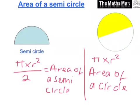It's quite simple. We just need to find the area of the circle and then divide it by two to get the area of our semicircle.